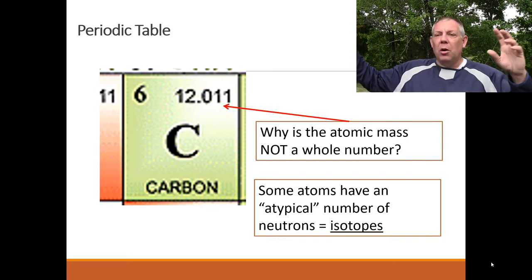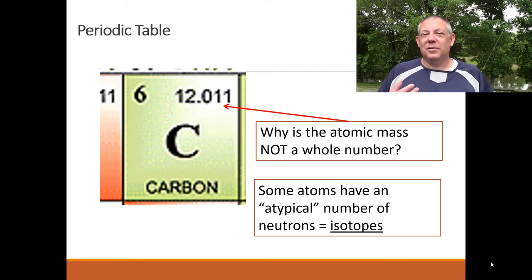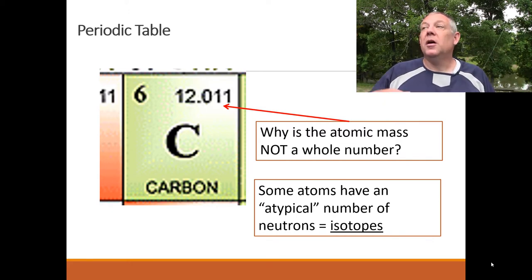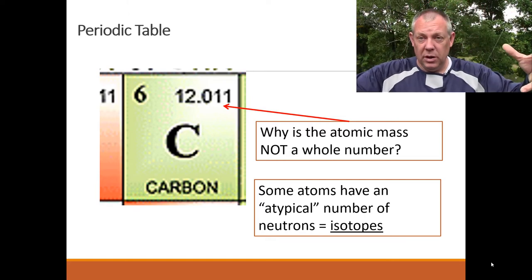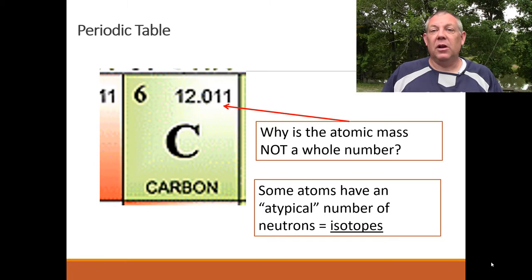If I grab a carbon atom anywhere on the planet, typically it will have six neutrons. But some have seven or eight neutrons — those are isotopes. To get the atomic mass, you take a huge sample of atoms and look at the average atomic weight. For carbon, most have six neutrons, but a few have seven and a few have eight, so the average comes out a little greater than 12.